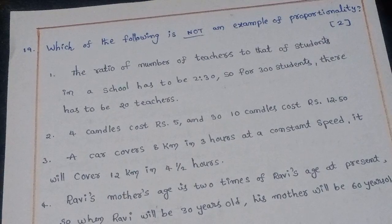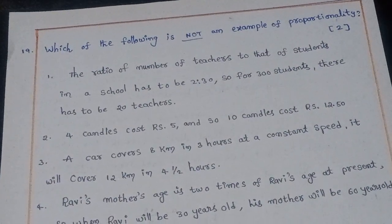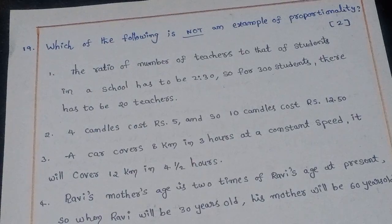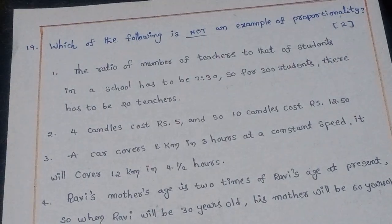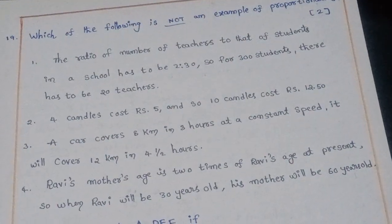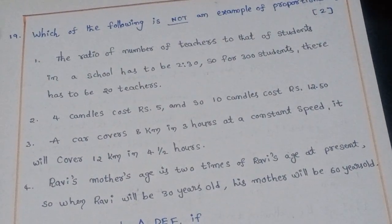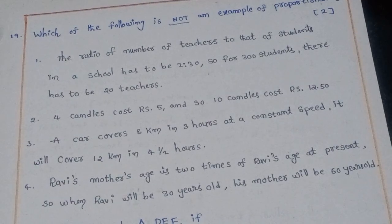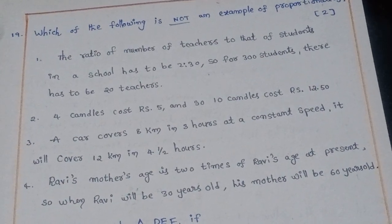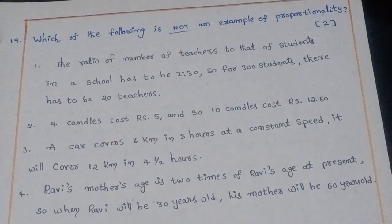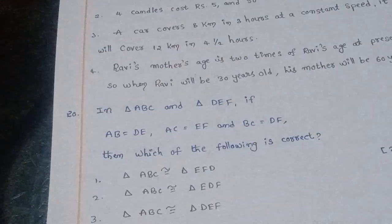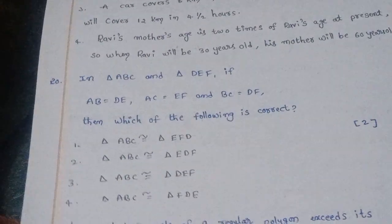Nineteenth question: Which of the following is not an example of proportionality? The right answer is option 2: '4 candles cost Rs. 5 and 10 candles cost Rs. 12.50' — this is not an example of proportionality.